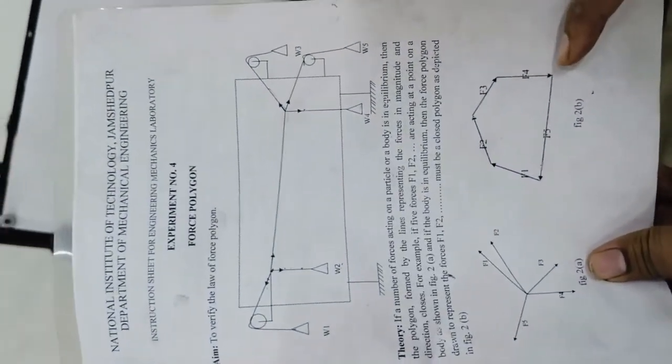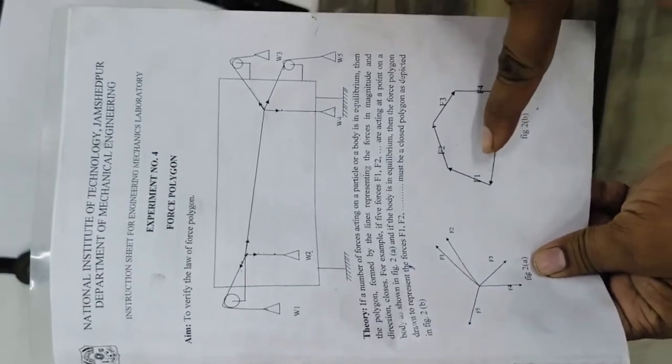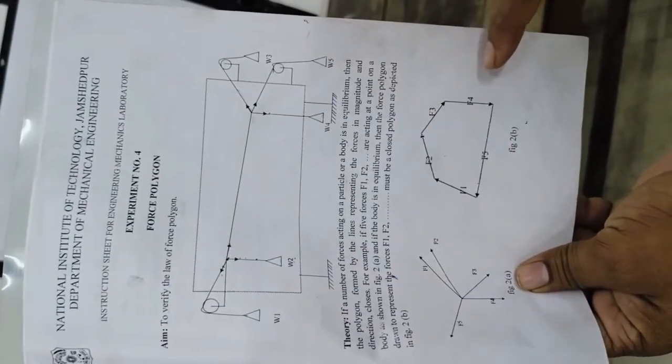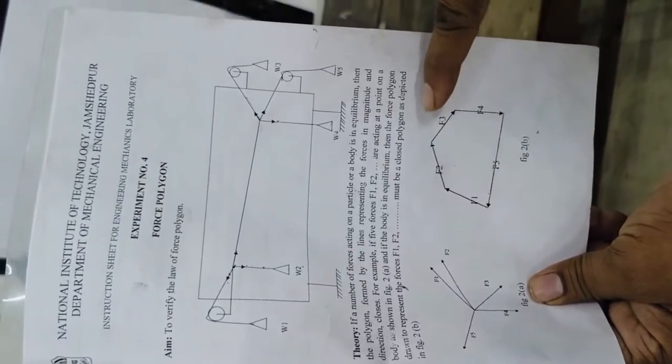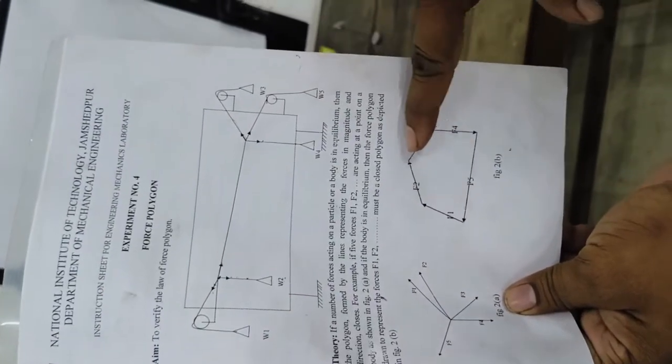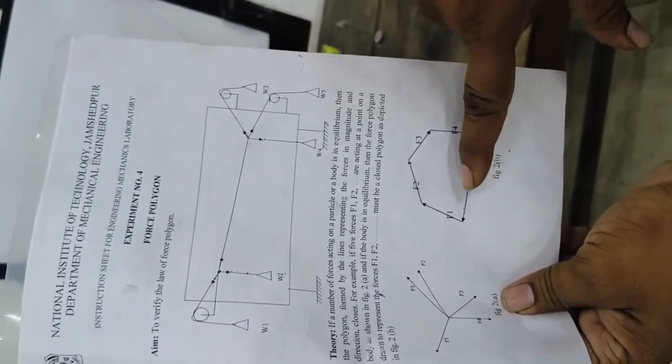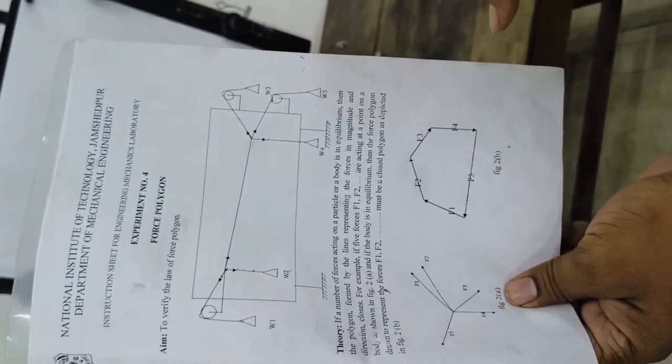In this experiment, one can see all the forces: F1, F2, F3, F4, and F5. All the forces are represented as lines which produces the polygon with the magnitude and directions.